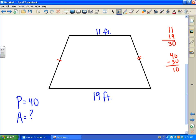Since this is an isosceles, these two sides, the two legs will be congruent. One will be 5 and the other one has to be 5. And so we now have a perimeter of 40, 11 plus 19 plus 5 plus 5.